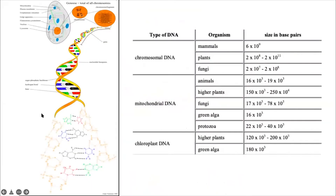What is a base pair? If you look over here, each one of these is a nucleotide. When two nucleotides of opposite strands connect to each other through hydrogen bonds, we call this a base pair. For example, A from one strand is hydrogen bonded to T on the other strand, and together A and T make up a base pair.